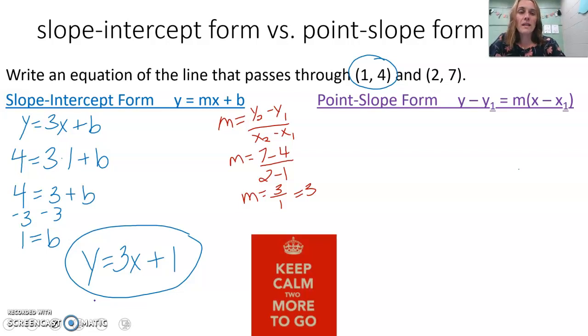We have m already, so let's plug that in first. y - y₁ = m(x - x₁), which is y - y₁ = 3(x - x₁). Now I'm going to use the other point, (2, 7), to show you that we should get the same equation with either point using either method. So y - 7 = 3(x - 2).